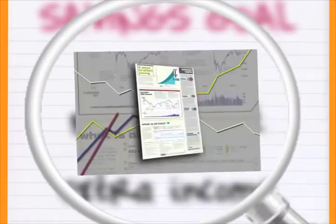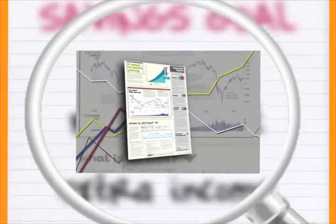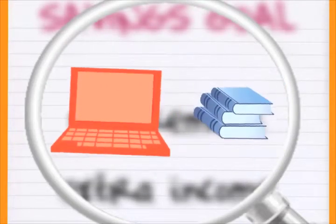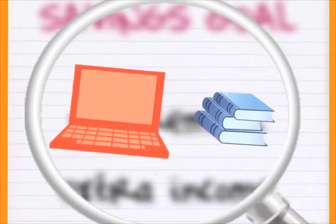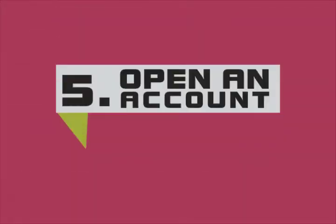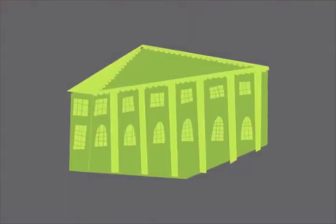Determine your investing goal. This can be retirement, extra income, college — anything. Different investments work better for different goals, so take a close look at your options by watching our investing common types video, talk to your financial advisor, and do some research to find the best investment for your goal.